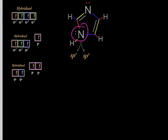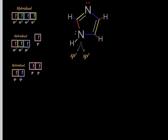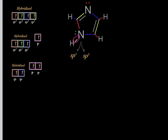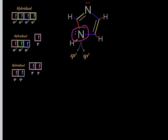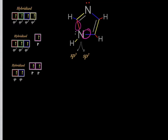What about this nitrogen — is it sp3-hybridized or sp2-hybridized? You might see that it has no extra bonds, and therefore conclude it has no p-orbitals and must be sp3-hybridized. However, in reality, this nitrogen is actually sp2-hybridized.